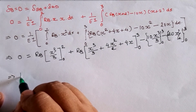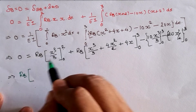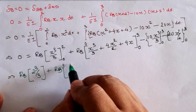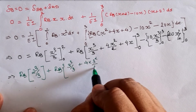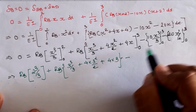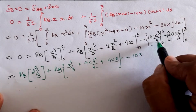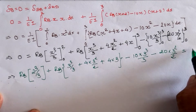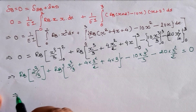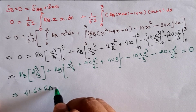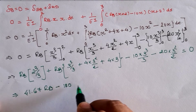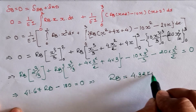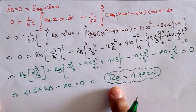Applying the limits: for the first part, RB × (2³/3) = RB × 8/3. For the second part, RB × (3³/3 + 4×3²/2 + 4×3) minus (10×3³/3 + 20×3²/2), all equal to zero. Solving this equation yields 41.67·RB − 180 = 0, giving RB = 4.32 kN.